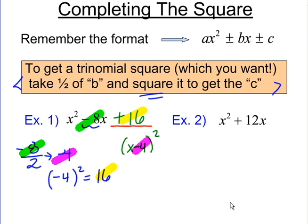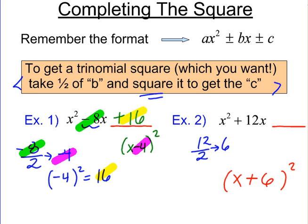Let's try again: x squared plus 12x. What do we add to get a perfect square trinomial, and what would it factor to? Half of 12 is 6, so we write x plus 6 inside the binomial. Then 6 squared is 36, so we add 36 to complete the trinomial square. You can see the tie-ins — the half of b goes into the binomial, and the squared result completes it.